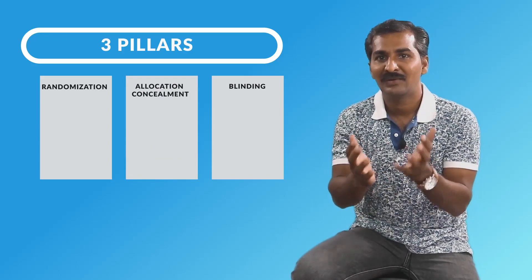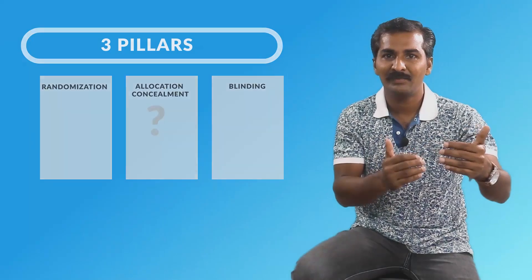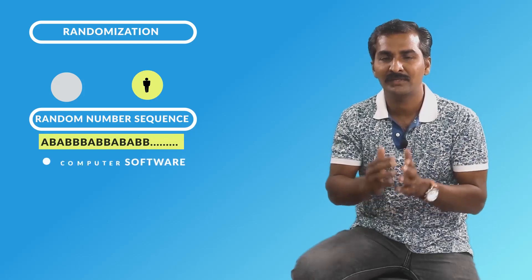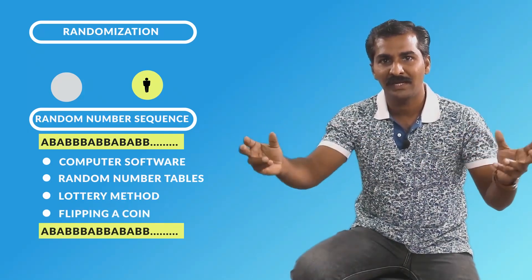The third pillar is allocation concealment. What is randomization? It is nothing but randomly allocating the study participants to one of the intervention groups. Suppose I have treatment group A and B — I'll generate a random number sequence using a computer software, random number tables, lottery method, or by flipping a coin, generating a very random sequence.